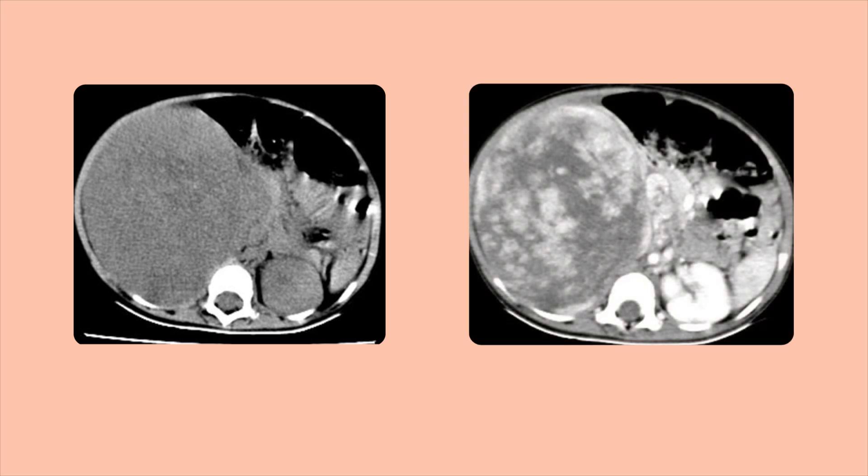CT has created quite a niche in the world of diagnostic imaging, and one of the reasons is the addition of contrast-enhanced imaging, which gives us the ability to distinguish internal structures that otherwise might be invisible. Two images of the same patient at the same slice level demonstrate this: the image on the left was performed without contrast, and the image on the right was performed with contrast. Without contrast, the large kidney mass — a Wilms tumor — is poorly visualized. In the second image with contrast, this mass and other abdominal structures are much more clearly defined.